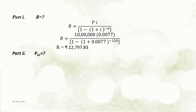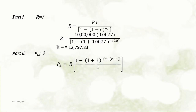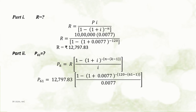Part 2: Here we want to calculate principal outstanding at the beginning of the 6th year. This implies k equals 12 multiplied by 5 plus 1, which equals 61. The principal outstanding in the beginning of the kth period equals R multiplied by [1 minus (1 plus i) raised to the power minus (n minus k minus 1)], the whole divided by i. Putting R = 12,797.83, i = 0.0077, n = 120, and k = 61, after calculation we get the principal outstanding at the beginning of the 61st month (beginning of 6th year) as Rs 6,13,068.83.